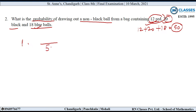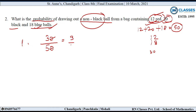अब देखते हैं number of favorable outcomes. इसने probability पूछी है non-black ball. Non-black means उसमें red आएगी और blue आएगी। अब red है 12 and blue है 18, तो ये कितनी हो जाएंगी? 30. तो number of favorable outcomes 30. तो यहाँ से cancellation की, तो probability आई 3 upon 5.